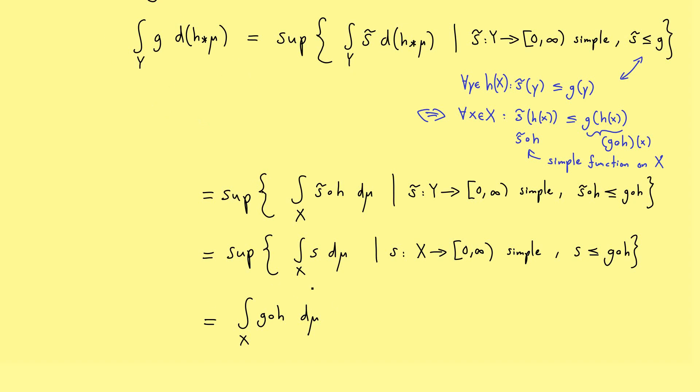What you also see is if you have an arbitrary measurable function g, then you can split it up into a positive and a negative part and then use the substitution rule here for both parts. And then we have our result: if one integral exists, also the other one exists.